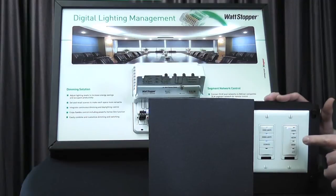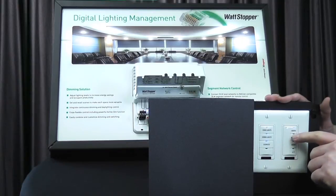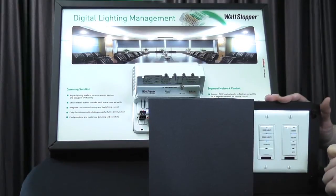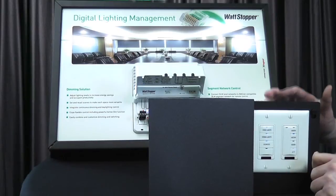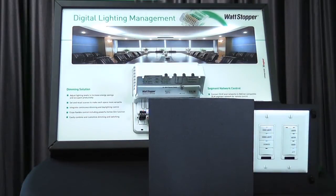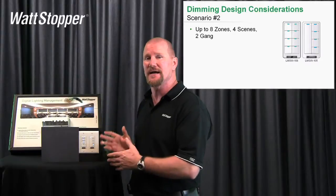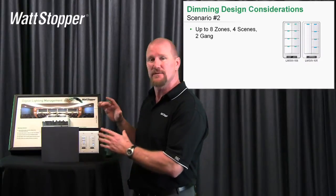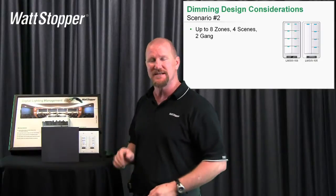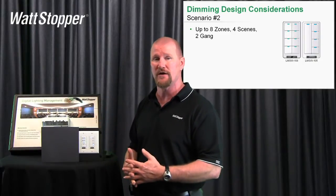We have four default scenes out of the box. Scene two puts everybody at 75%, and the bottom scene puts everybody at 25%. They're already there — I didn't do any setup. This is huge. This is a truly powerful out-of-the-box, plug-and-go, four-scene dimming system.